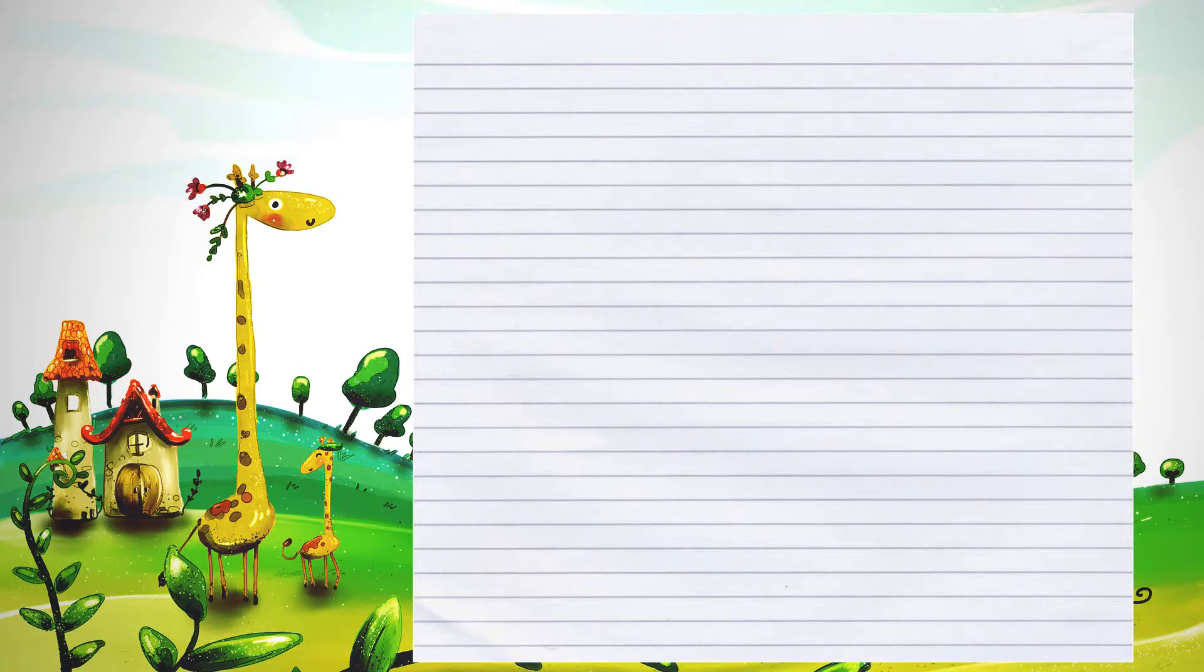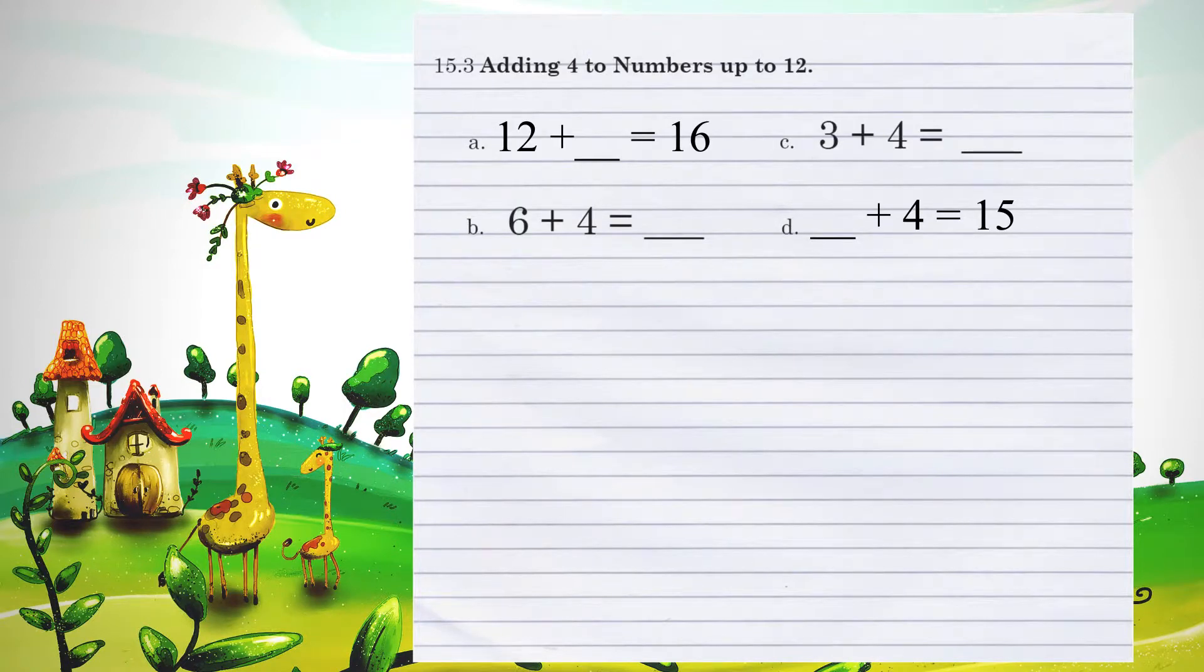Unit 15.3, adding 4 to numbers up to 12. Let's look at example B. 6 plus 4. If we start at 6, and we move 4 spots to the right, we have 7, 8, 9, 10. So, 6 plus 4 is 10.